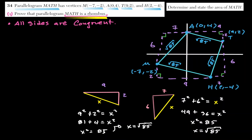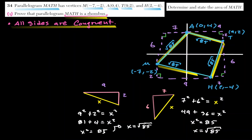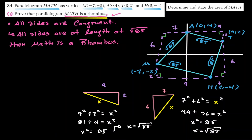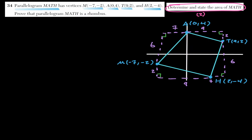We have shown that the parallelogram is a rhombus because all four sides are equal in length — that is the definition of a rhombus. Now let's find the area of the rhombus MATH.